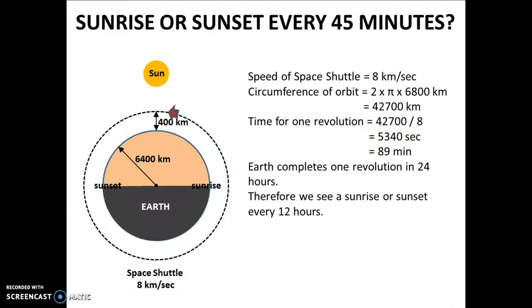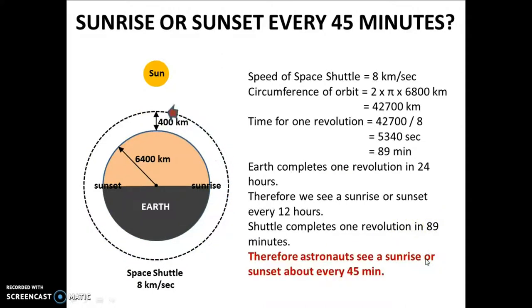Now, since the Earth completes one revolution in 24 hours, we on the Earth see a sunrise or a sunset every 12 hours. But since the space shuttle completes one revolution in 89 minutes, the astronauts on the space shuttle will see a sunrise or a sunset every 45 minutes. Interesting, isn't it?